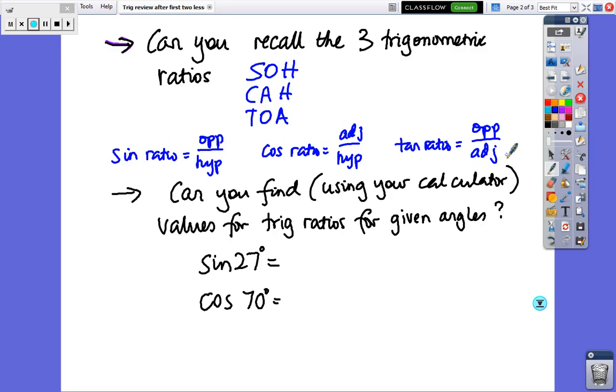Ok, so sin 27 on your calculator is 0.45, correct to two decimal places. There's lots of decimal places, but 0.45. And for the next one, cos of 70 is 0.34. So if you didn't get those, just check that your calculator is in degree mode, that's a common error. And obviously, you've got some rounding errors you could have had as well.